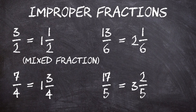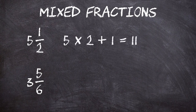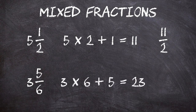What if we want to convert the other way — convert a mixed fraction to an improper fraction? To do this, we need to multiply the whole number by the denominator, add the numerator, and then write the result on top of the denominator. So for the first problem, five and a half, we multiply five by two to get ten, and then add the numerator one to get eleven. Eleven over two is the same thing as five and a half. For the second one, three and five-sixths, we multiply three by six to get eighteen, add five to get twenty-three. So the final result will be twenty-three over six. Twenty-three-sixths has the same value as three and five-sixths.